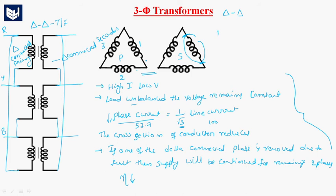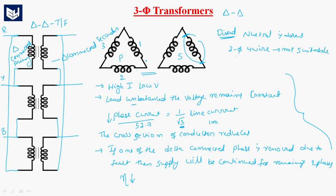The main disadvantage of delta-delta connection is that we don't have a fourth point — that is, the neutral is absent. So this system is not suitable for a three-phase four-wire system, because there is no neutral point. Another point is that the insulation required is more compared to star-star connection. For delta-delta connection, the insulation required is more.